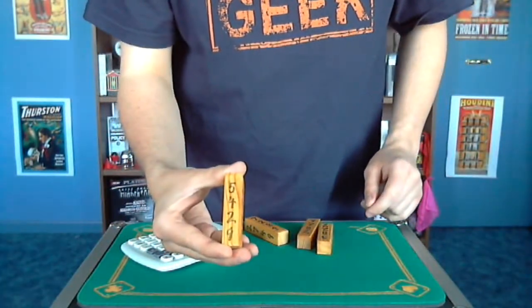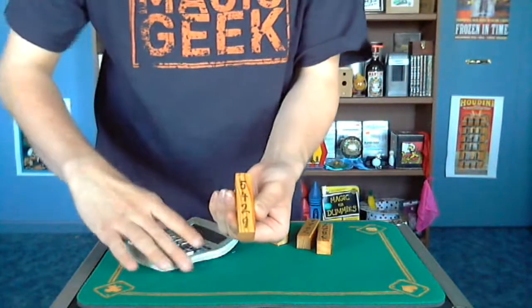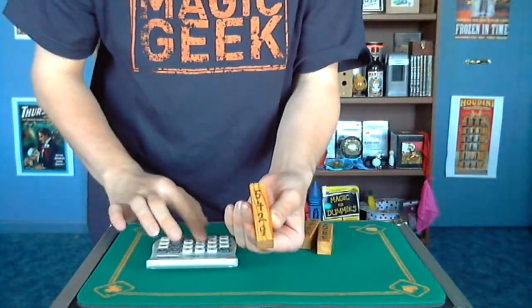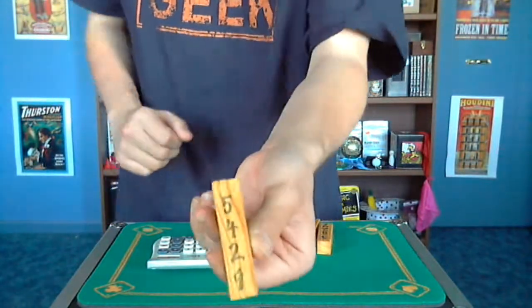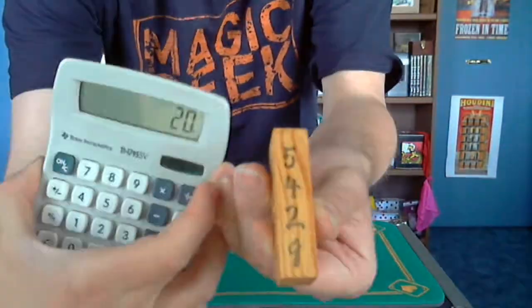So this is going to be 20. It's going to be 20. So if I put 5 plus 4 plus 2 plus 9 is 20. Told you, I'm fast.